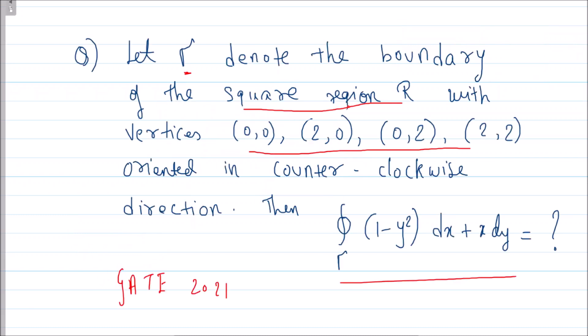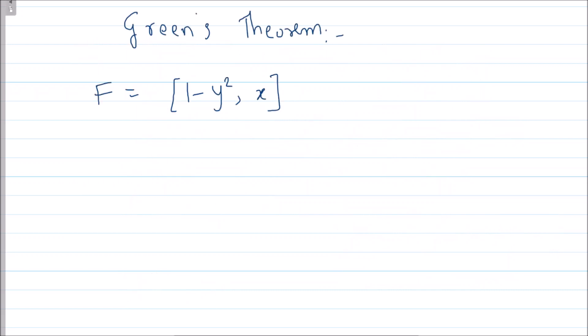Now in this scenario, if we apply Green's theorem, what do we have? First, what is our vector field? [1-y², x]. So my F is [1-y², x]. If I do the line integral along the curve gamma F·dr, that is nothing but double integration over the region R: second component with respect to x minus first component with respect to y, then dy dx or dx dy.